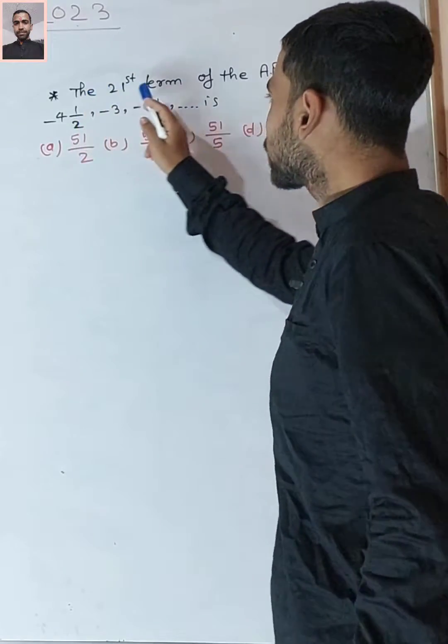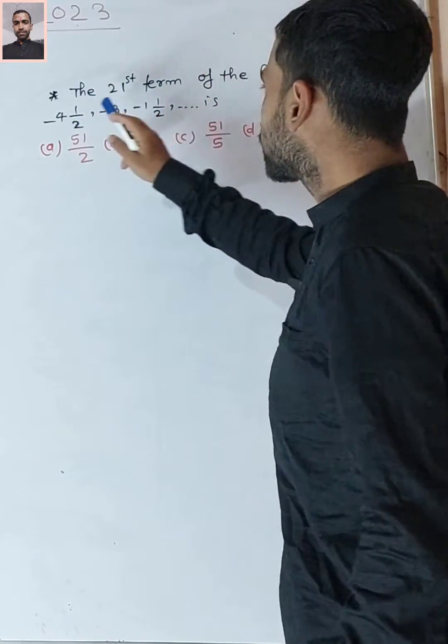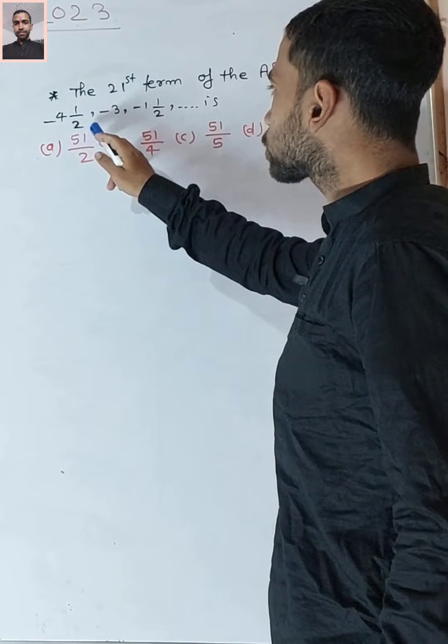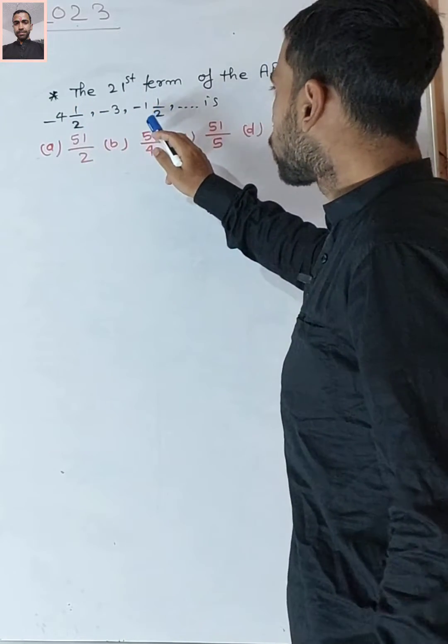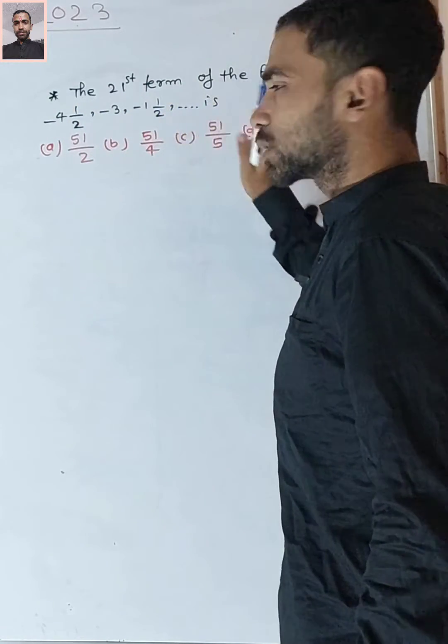Hello, the question is: find the 21st term of the AP: -4½, -3, -1½.